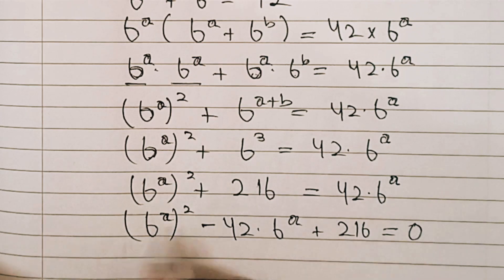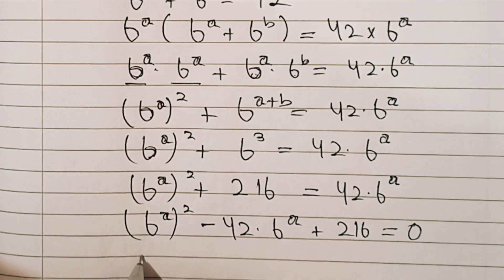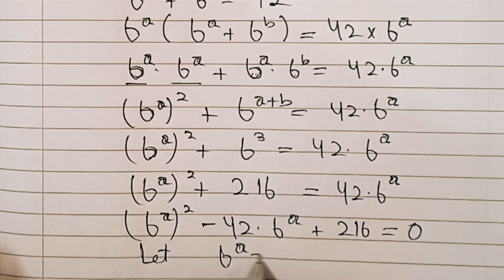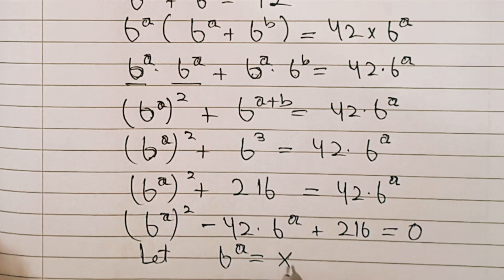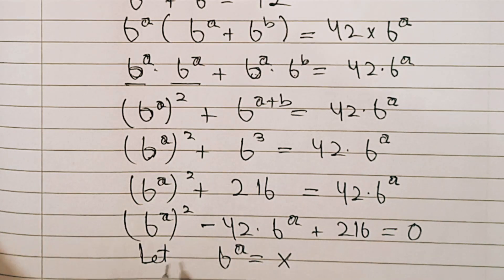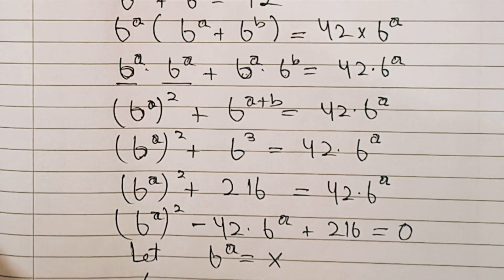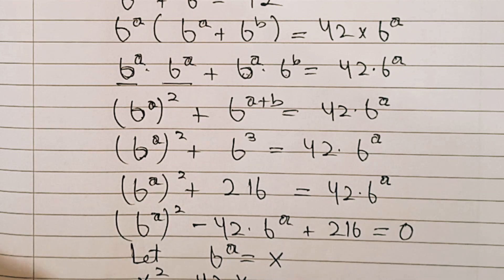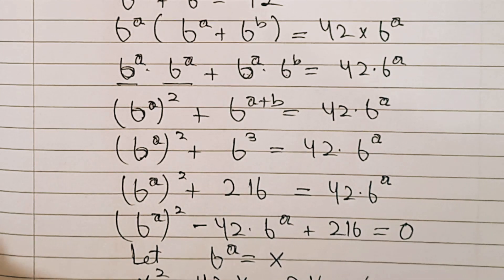Now in the next step, let 6 power a equal x. So this equation can be written as x squared minus 42x plus 216 equals 0.